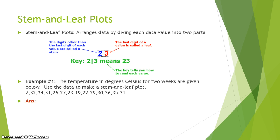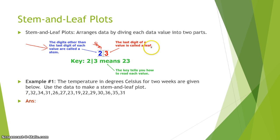With stem and leaf plots, you arrange your data by dividing each data value into two parts. For example, with the number 23, the 2 is called the stem — the digits other than the last digit. The 3 is called the leaf, representing the very last digit. You'll often see a key like 2 | 3 meaning 23, which tells you how to read the values.